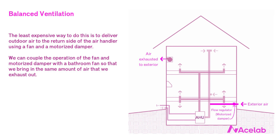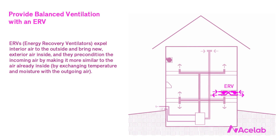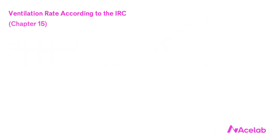Another way of providing balanced ventilation is to install an ERV. This equipment expels interior air to the outside and brings in new exterior air. The nice thing about ERVs is they precondition the incoming air by making it more similar to the air that's already inside, but the main advantage is the ventilation component — we know exactly where the fresh air is coming from. Now let's get to the controversy, which has to do not so much with the way we introduce exterior air, but the rate at which we do so.